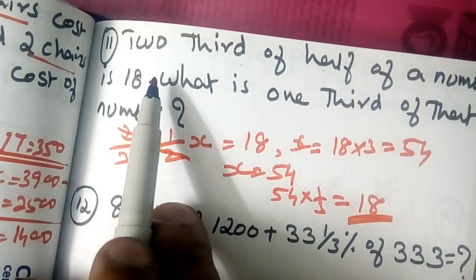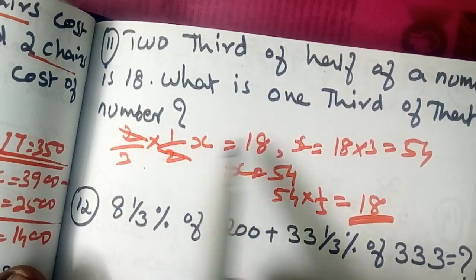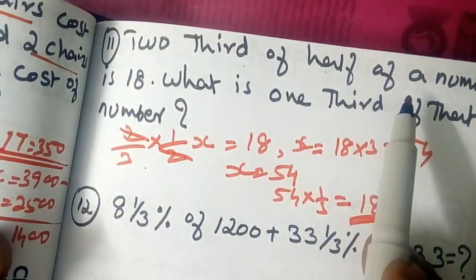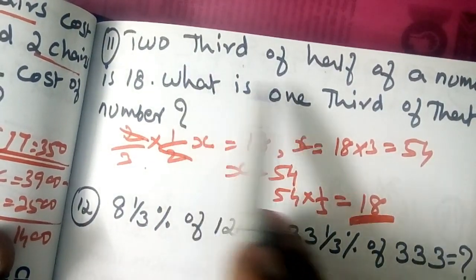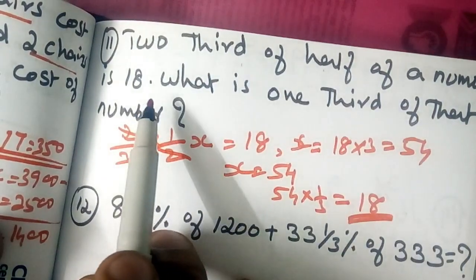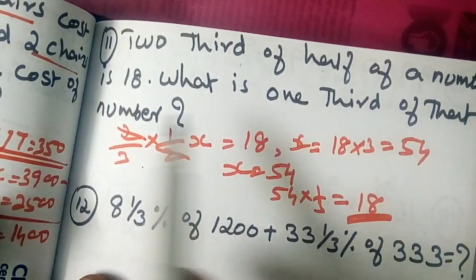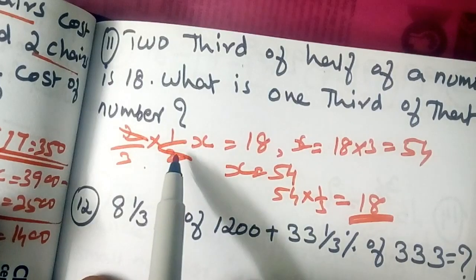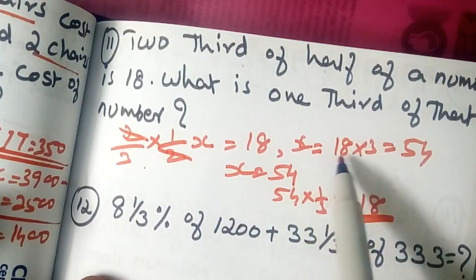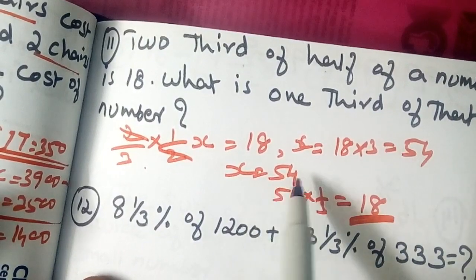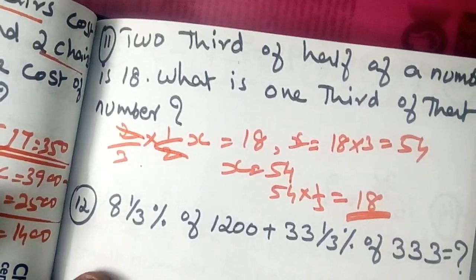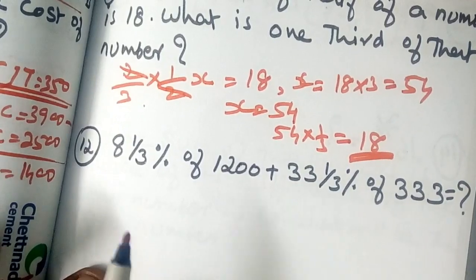2/3 of half of x: putting 1/2 of x, this is equal to 18. Then x is equal to 18 into 3, which is 54. For 54, one-third is equal to 18. This is the answer.